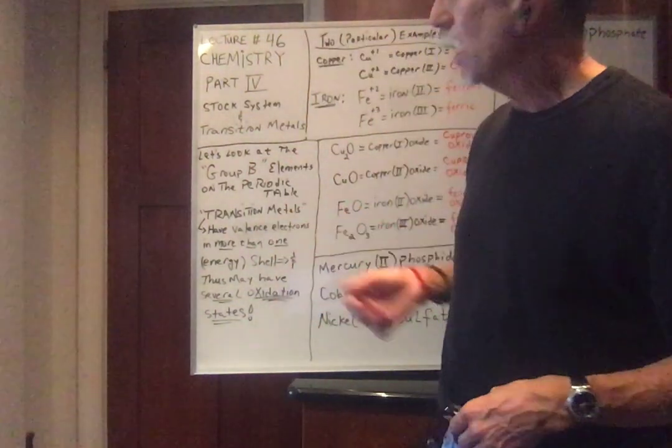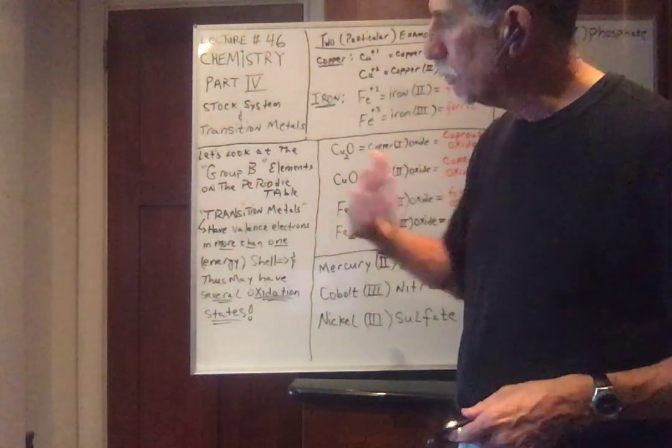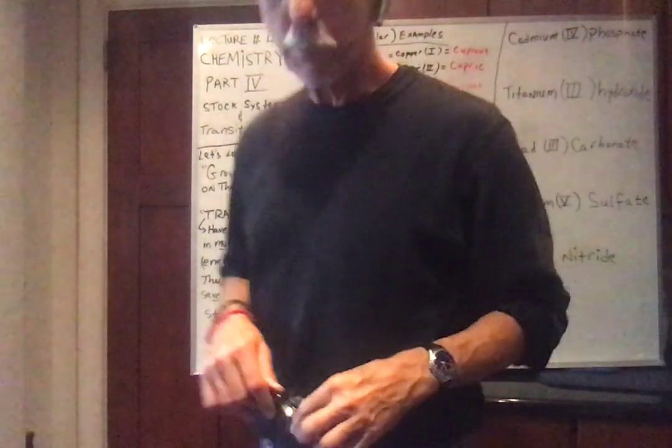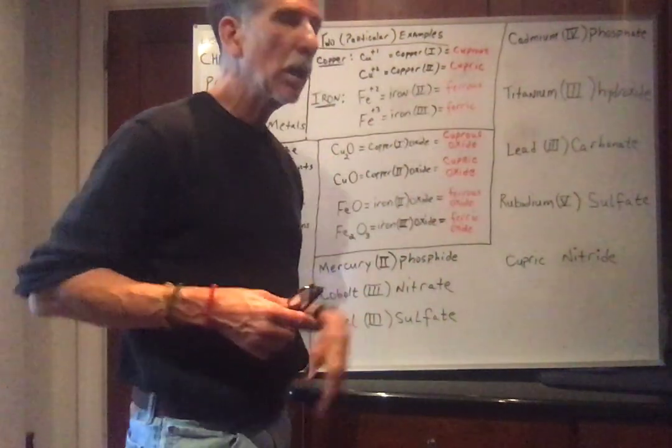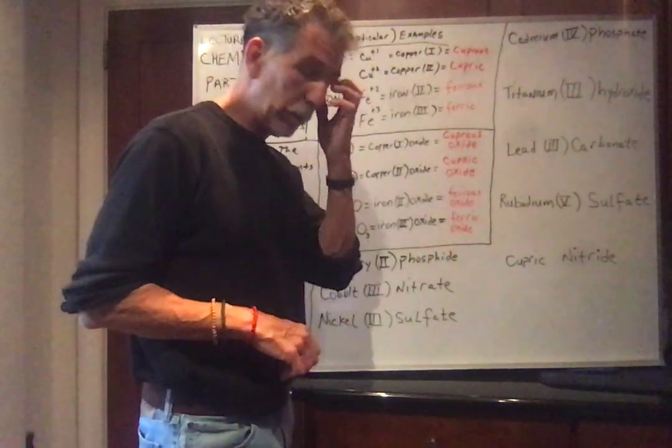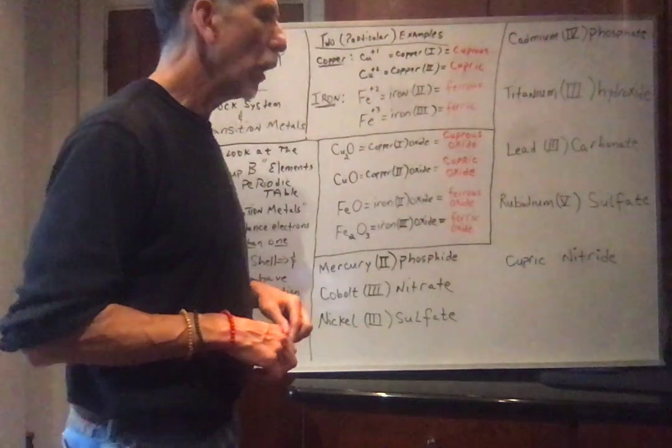The transition elements, the group B, can have different oxidation numbers. I'm going to talk briefly, and you should learn these names, two particular examples: copper and iron.